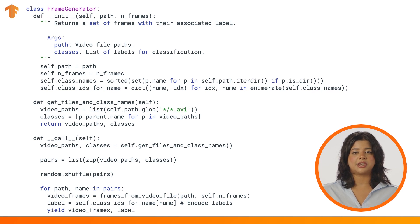The FrameGenerator class uses a generator function that will yield the frame array and an encoded label associated with that set of frames. Use this class to create a TensorFlow data input pipeline. It allows you to feed data into your model.